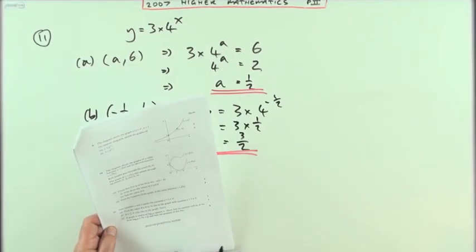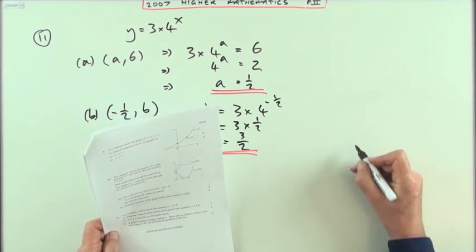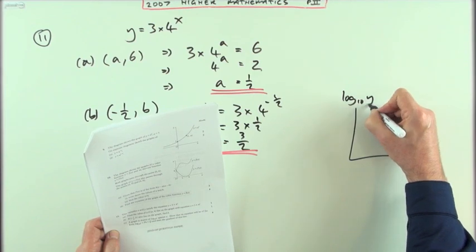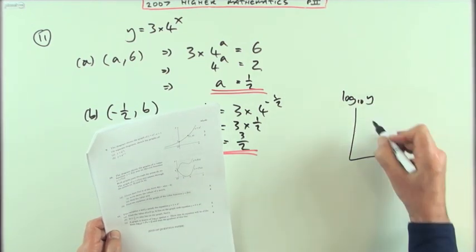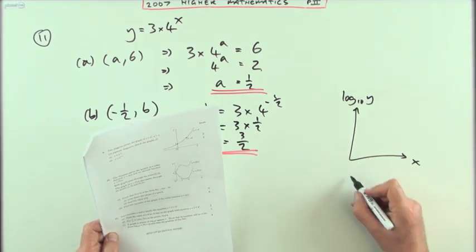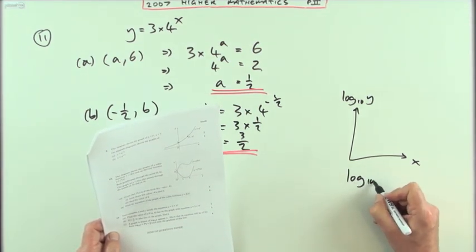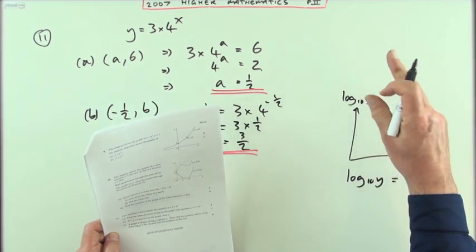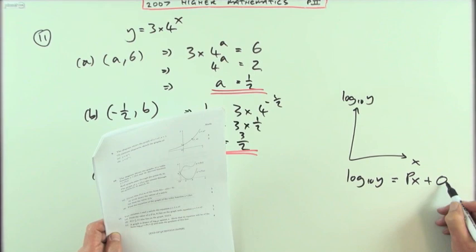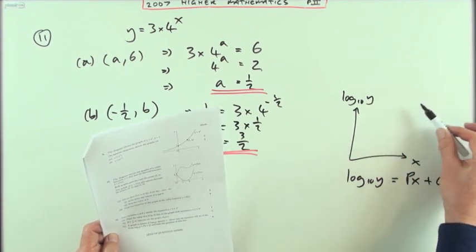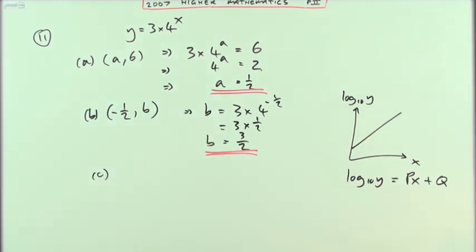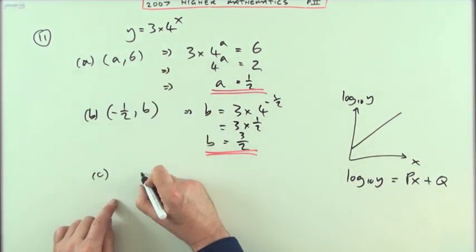Now for part c, four marks. A graph is drawn of log₁₀ of y against x. It says show that this equation will be of this form. You'd expect it to be the form of log₁₀ y being the vertical variable equals px plus q. So you're expecting this to be some straight line. You're expecting that to look something like this. Well, how would you arrive at that? Just start with this equation: y equals 3 times 4 to the x.